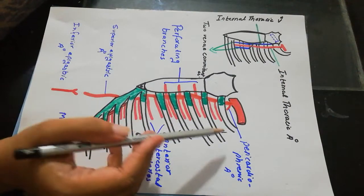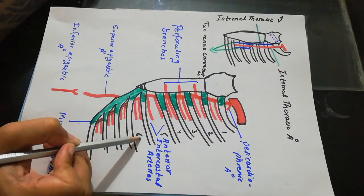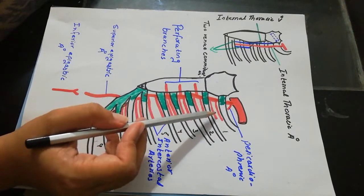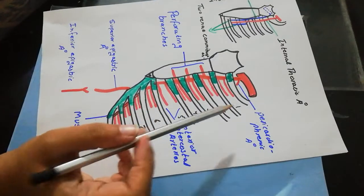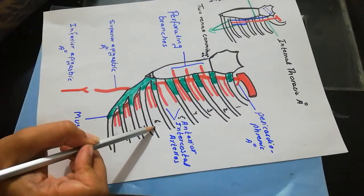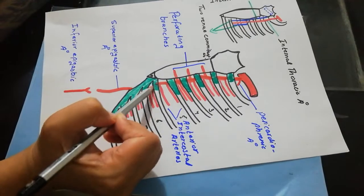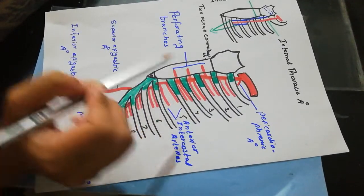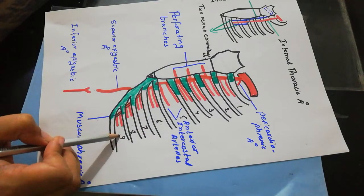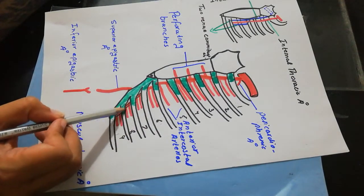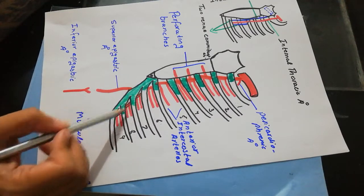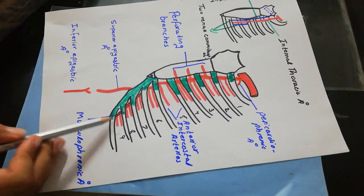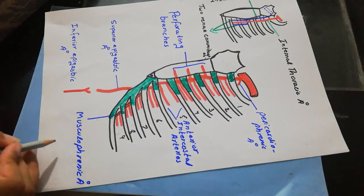In the first 6 intercostal spaces, the internal thoracic artery gives 2 anterior intercostal arteries in each space. In the 7th, 8th, and 9th intercostal spaces, 2 anterior intercostal arteries in each space are given by the musculophrenic artery. The musculophrenic artery later anastomoses with the underlying arteries of the diaphragm.